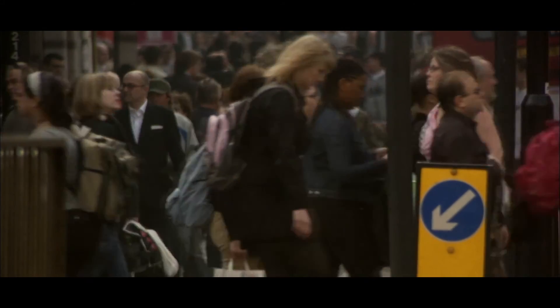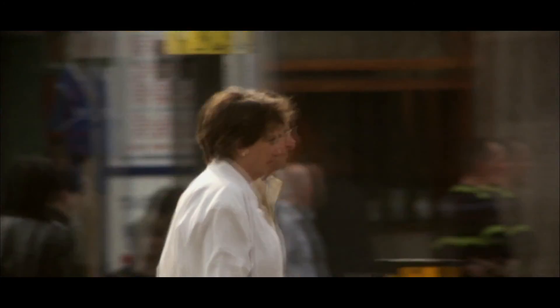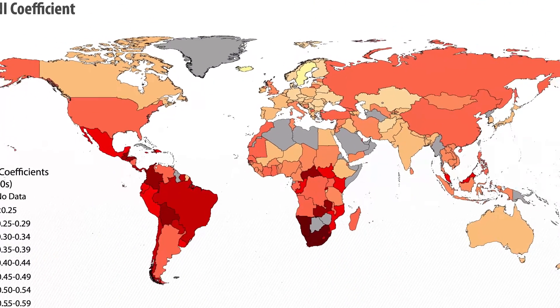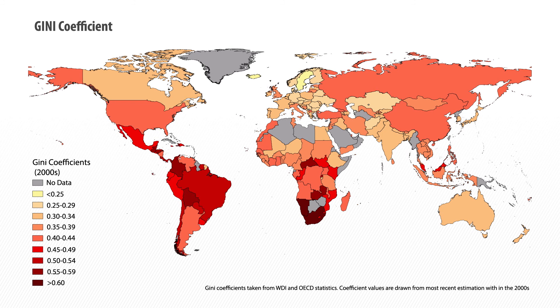Societies that we would regard as rather equal with a broad middle class — a lot of countries in Scandinavia, for example — have a Gini coefficient around 0.25. Whereas countries that are much less equal, where there really is a lot of wealth at the top but a lot of poverty alongside it, might have a Gini coefficient around 0.5 or 0.6. It's an extremely useful measure. We can put it on a map and see where inequality tends to be high and where it tends to be relatively low.